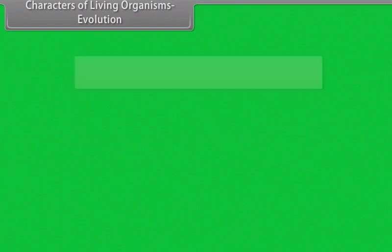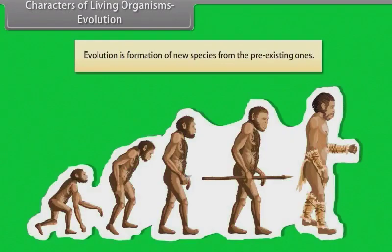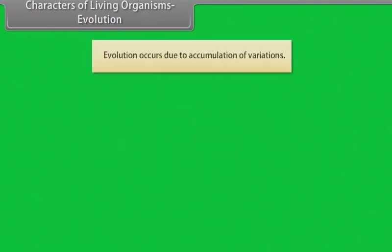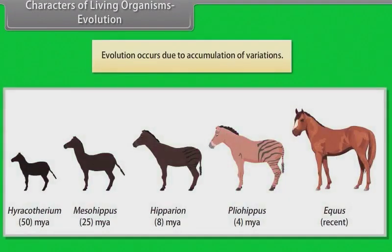Evolution is the formation of new species from pre-existing ones. Evolution occurs due to the accumulation of variations.